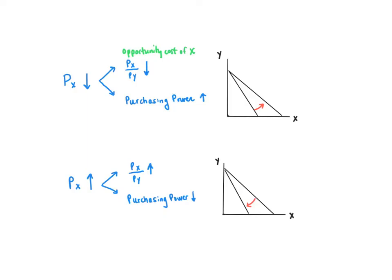Because the opportunity cost of X is lower, there's a voice in the consumer's head that says: I want to now buy more X and less Y because for every X I buy, I don't have to give up as much Y. Similarly, when the price of X goes up, the budget line gets steeper, meaning the opportunity cost of X is higher. This induces a voice that says: I don't want to buy as much X; instead, I want to substitute towards Y and away from X.